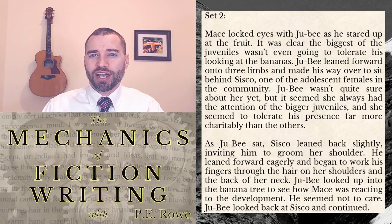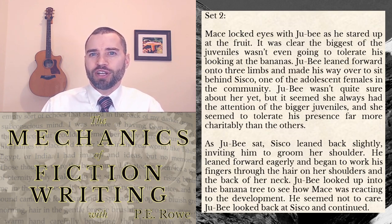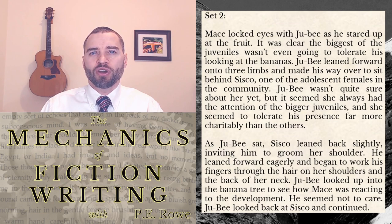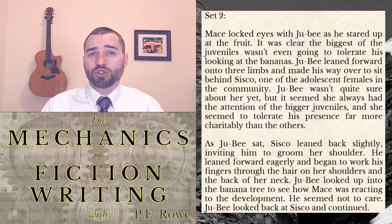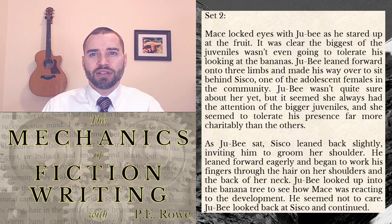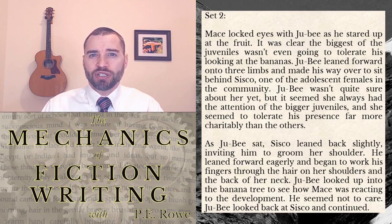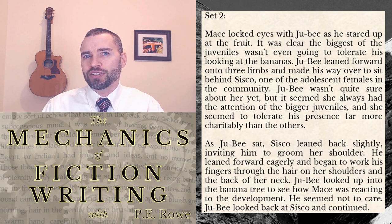Set 2. Mace locked eyes with Juby as he stared up at the fruit. It was clear the biggest of the juveniles wasn't even going to tolerate his looking at the bananas. Juby leaned forward onto three limbs and made his way over to sit behind Sisko, one of the adolescent females in the community. Juby wasn't quite sure about her yet, but it seemed she always had the attention of the bigger juveniles, and she seemed to tolerate his presence far more charitably than the others. As Juby sat, Sisko leaned back slightly, inviting him to groom her shoulder. He leaned forward eagerly and began to work his fingers through the hair on her shoulders and the back of her neck. Juby looked up into the banana tree to see how Mace was reacting — he seemed not to care. Juby looked back at Sisko and continued.